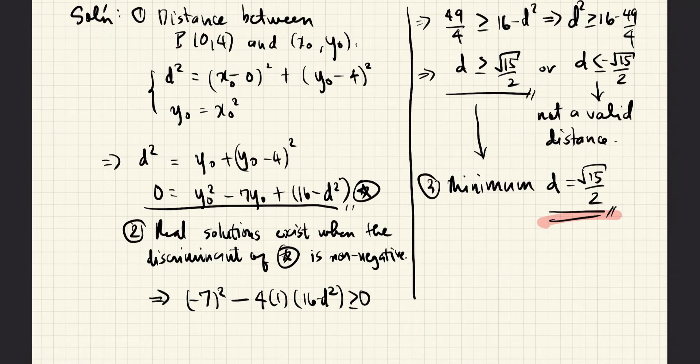First, we write the expression for the distance between P and (x₀, y₀). We use the usual distance formula. D here is the distance between the two points. x sub 0 minus zero is the difference between the x coordinates. We square that, and we also do the same for the difference in the y coordinates.